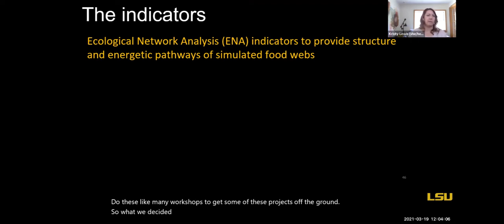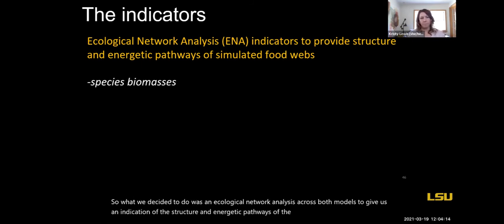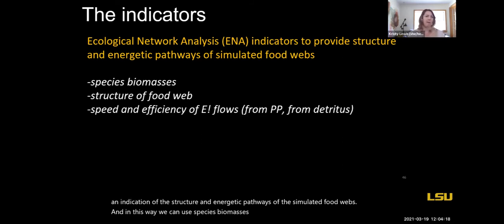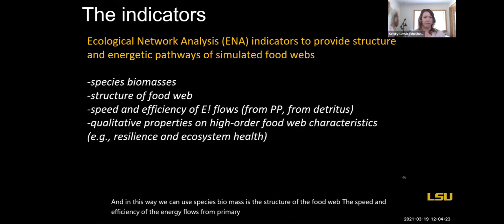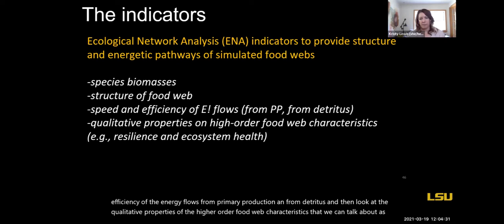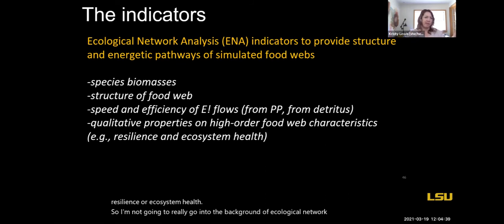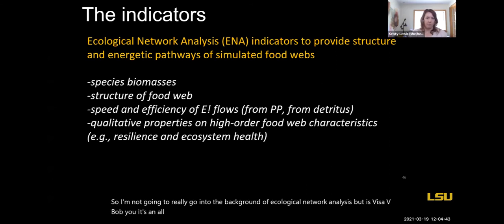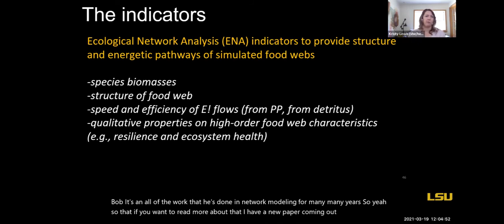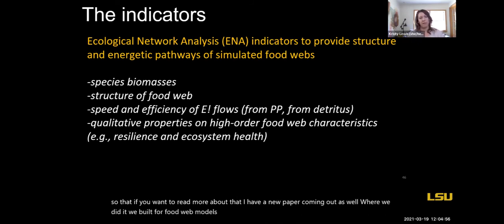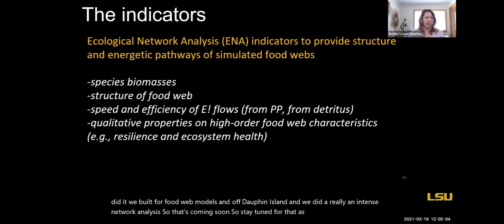Using ecological network analysis, we can look at species biomasses, the structure of the food web, the speed and efficiency of energy flows from primary production and from detritus, and then look at the qualitative properties of higher-order food web characteristics that we can talk about as resilience or ecosystem health. The background of ecological network analysis is vis-à-vis Bobby Ulanowicz and all of the work he's done in network modeling for many years. I have a new paper coming out as well where we built four food web models off Dauphin Island and did an intense network analysis — so stay tuned for that.